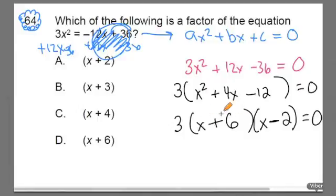What we have here are two factors of this equation. One of them is x plus 6, and the other one is x minus 2. So the answer here, one of the factors would be x plus 6.